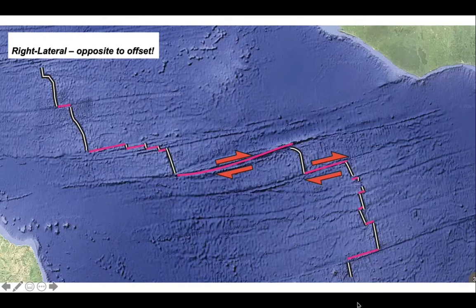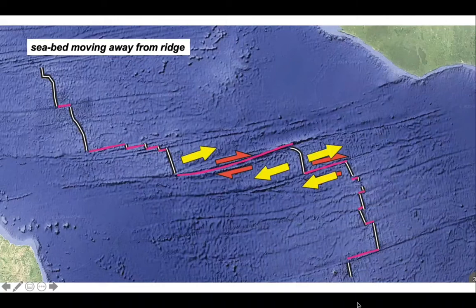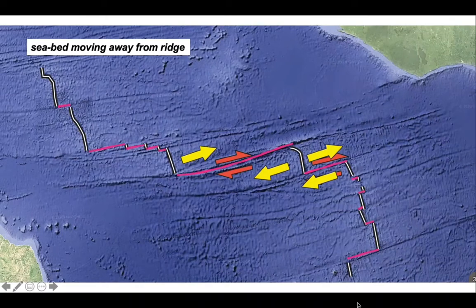So conventional interpretations treating the fracture zones as through-going faults offsetting a pre-existing ridge system are not appropriate. If we just look at those slip arrows and think about how the crust is moving past each other in those segments, it's moving in a way implying that the rocks are moving away from the ridge segments.